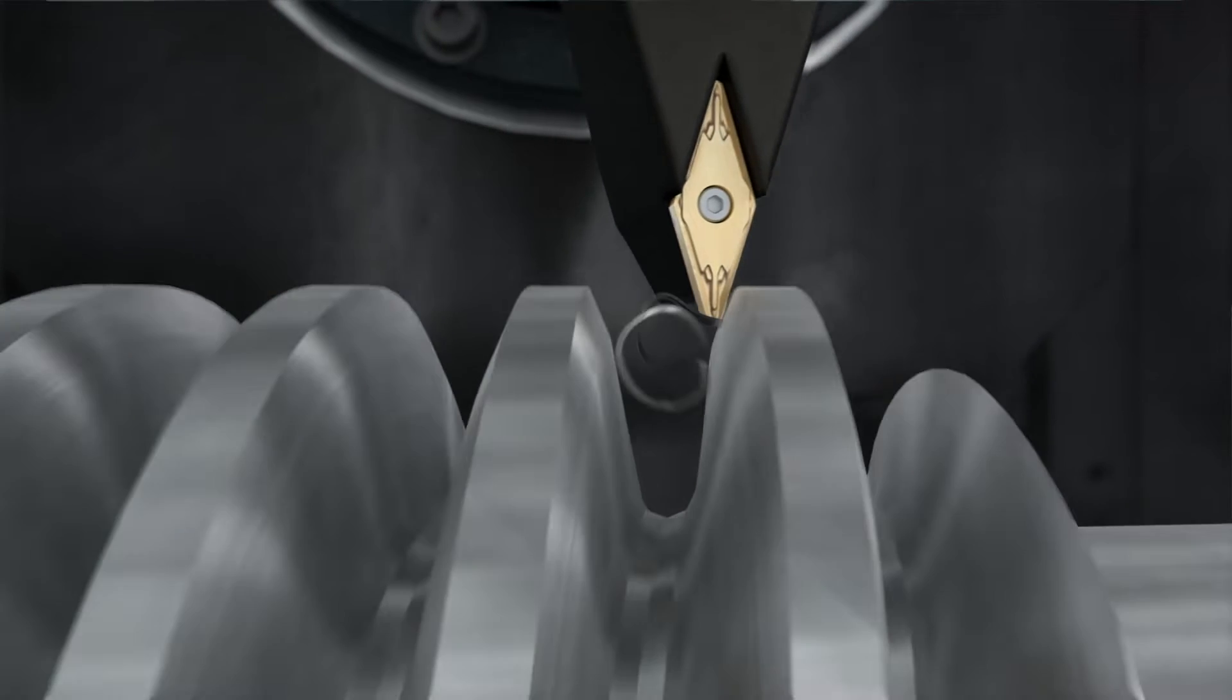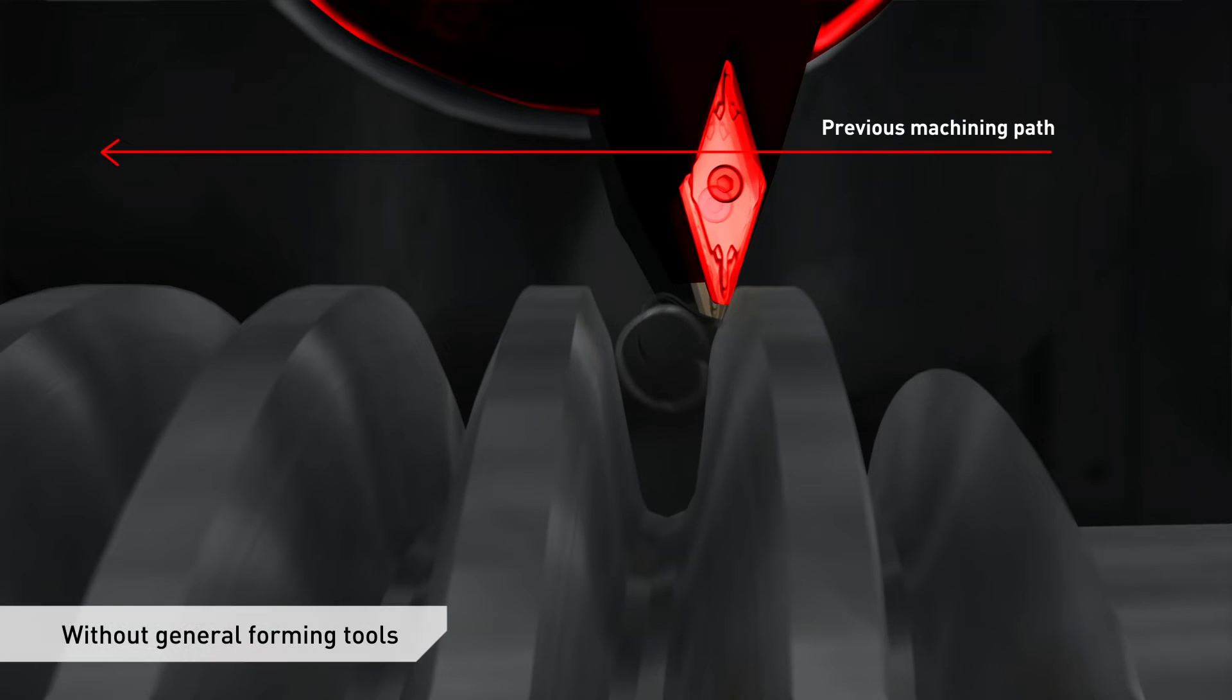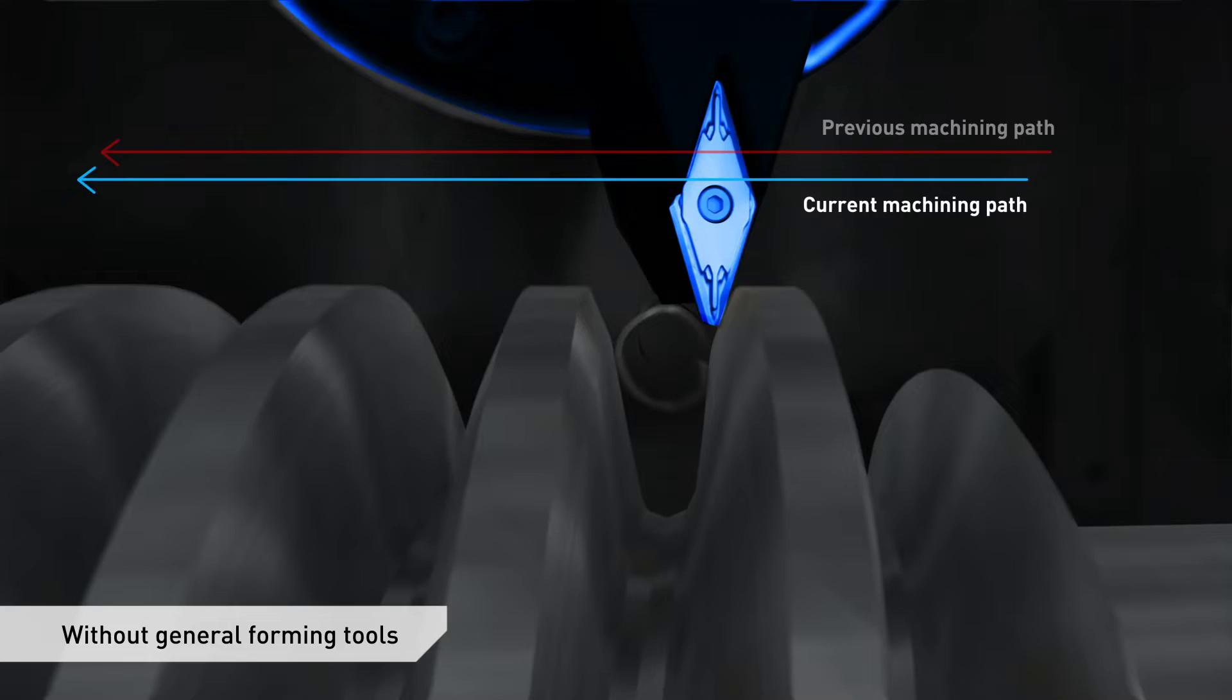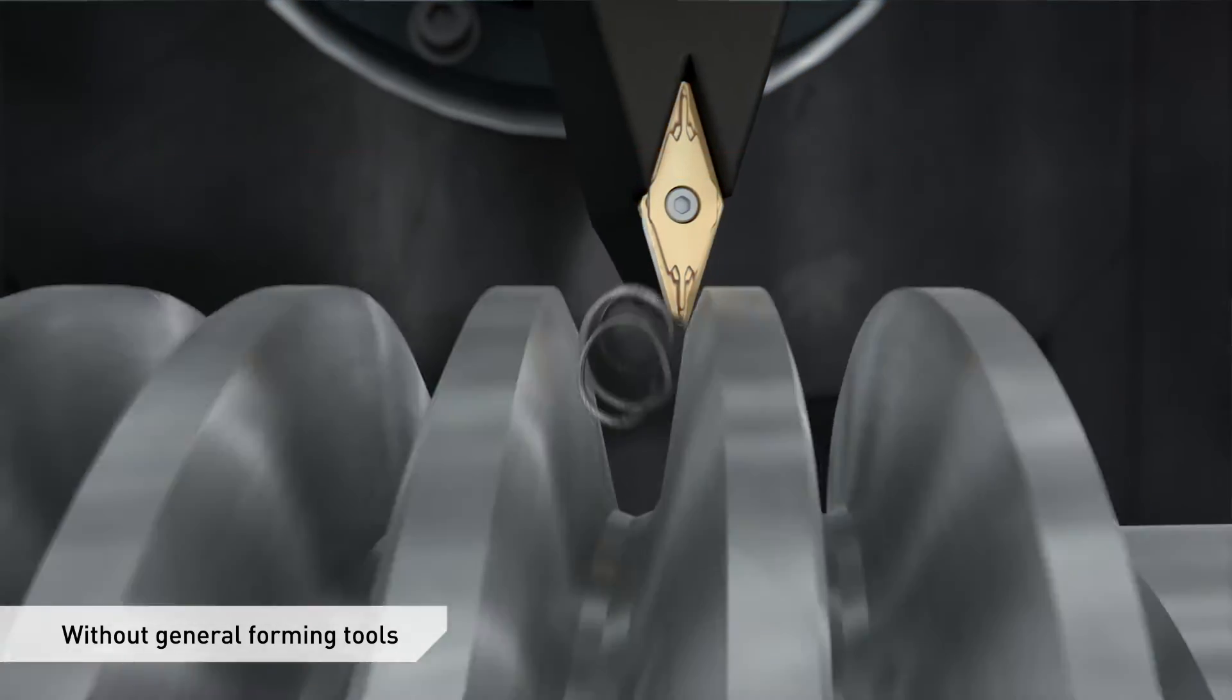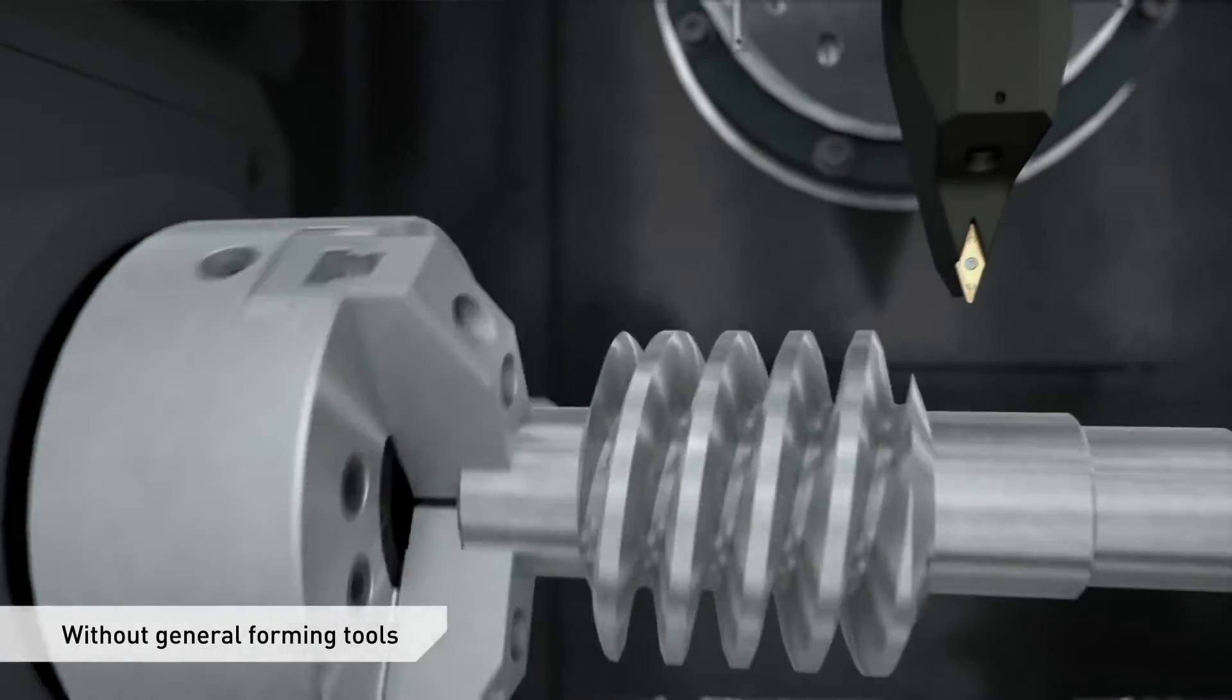The technology cycle multithreading automatically generates machining paths according to the thread geometry, therefore eliminating the need for general forming tools.